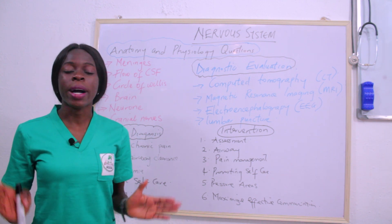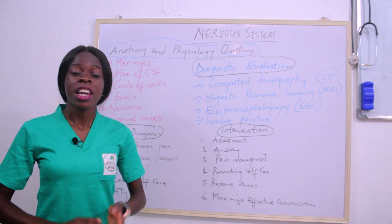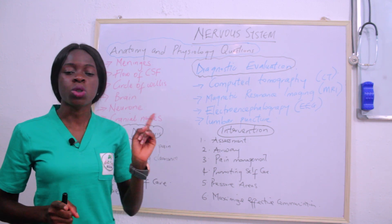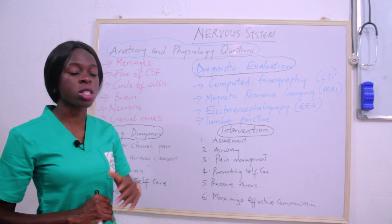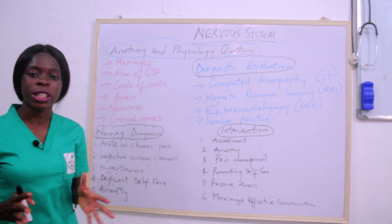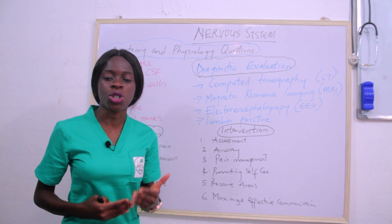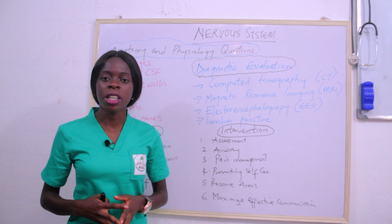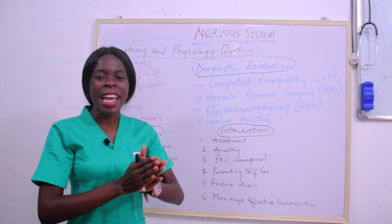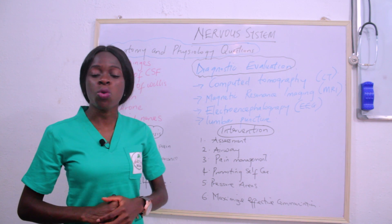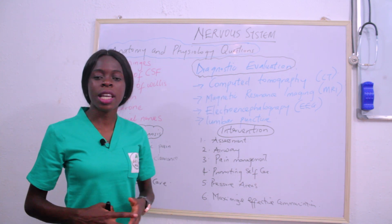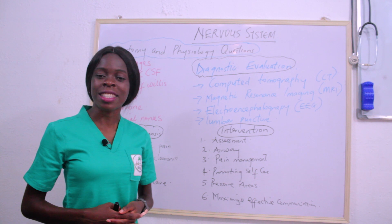These are the likely anatomy and physiology questions you are going to get related to the nervous system. If you don't understand these, send a message to the WhatsApp number on the screen — we have voice notes relating to these topics. Now, moving on to another important area: the diagnostic evaluations — for head injury, spinal cord injury, and conditions relating to the brain and spinal cord.